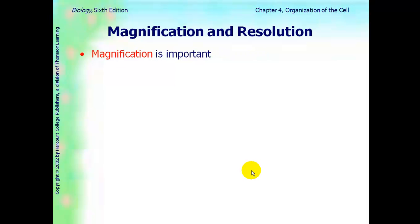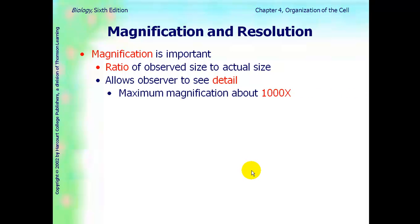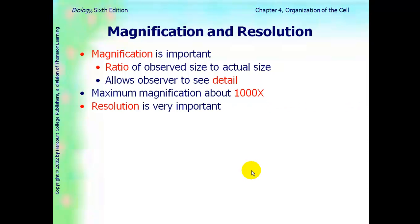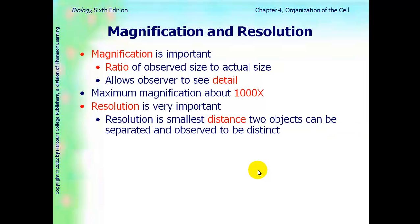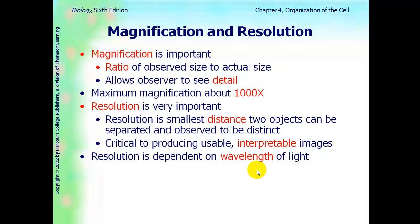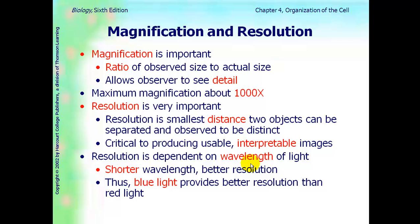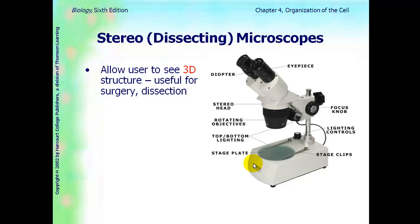Two terms that you need to know about the microscope. Magnification is the ratio of the observed size to the actual size. It allows the observer to see detail. The maximum magnification on most light microscopes are 1000x. Resolution is also important. You know this if you have a camera or a phone camera. Resolution is the smallest distance two objects can be separated and observed to be distinct. It is critical to produce usable, interpretable images. Resolution is dependent on the wavelength of light. The shorter the wavelength, the better the resolution. So blue light has the best resolution.